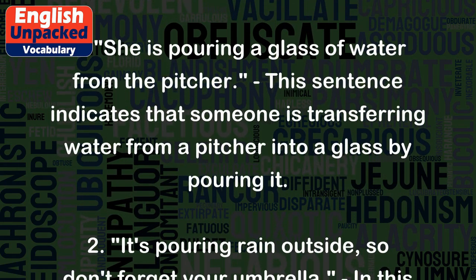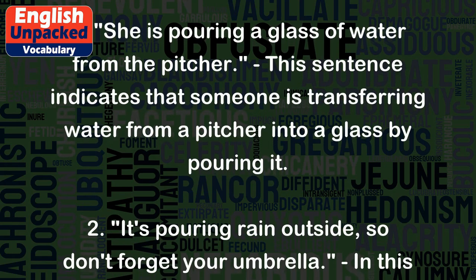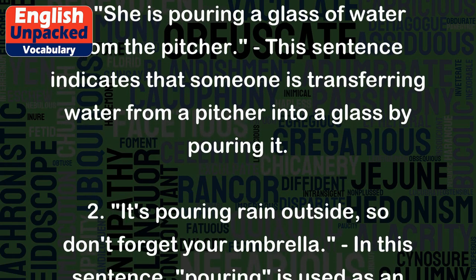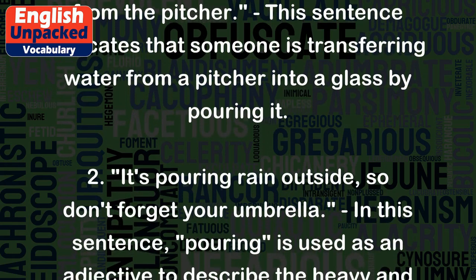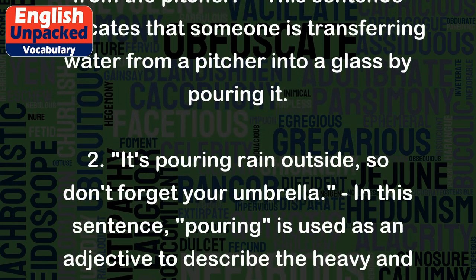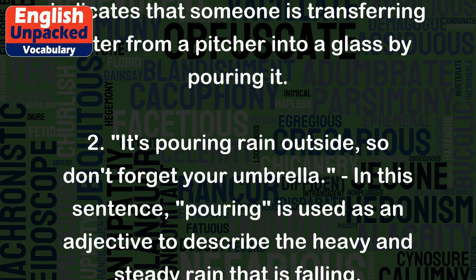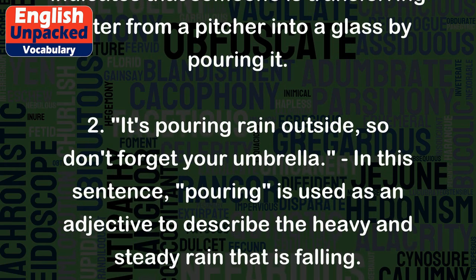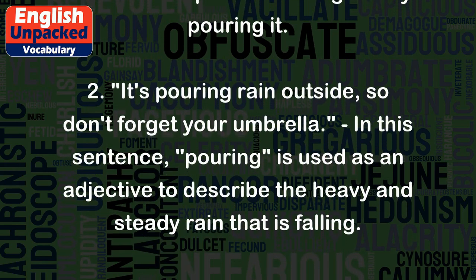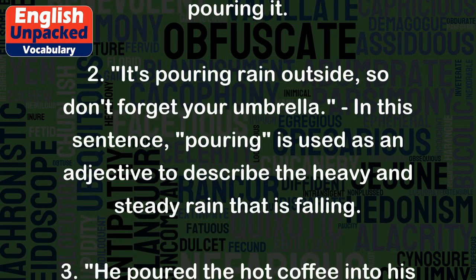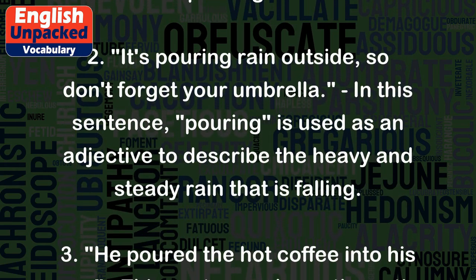Two: It's pouring rain outside, so don't forget your umbrella. In this sentence, 'pouring' is used as an adjective to describe the heavy and steady rain that is falling.